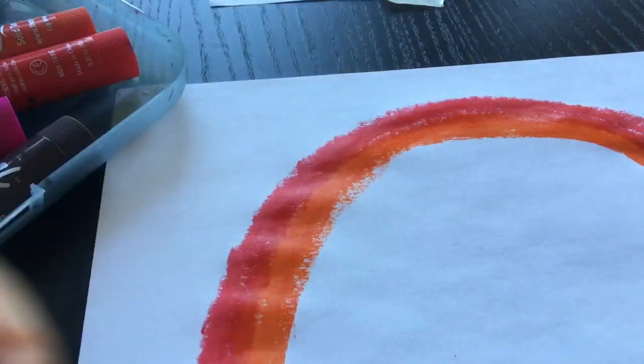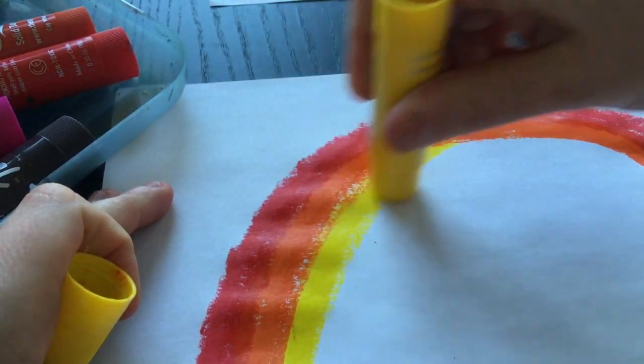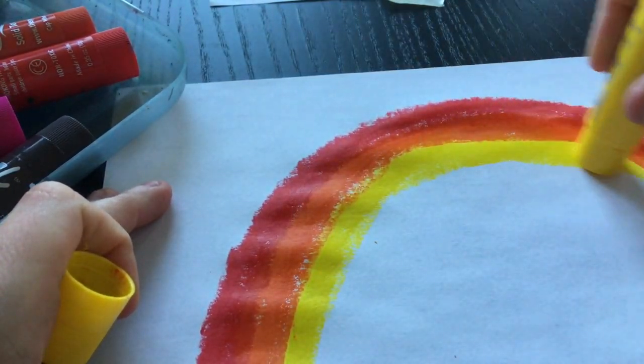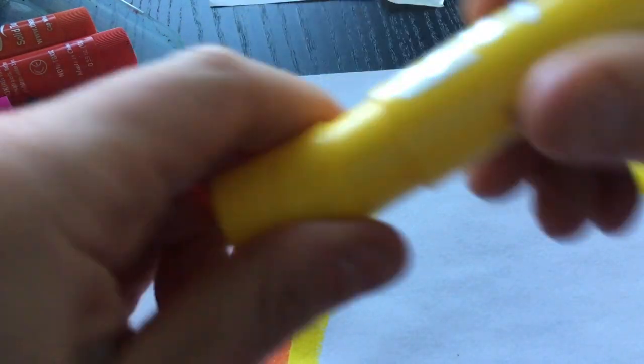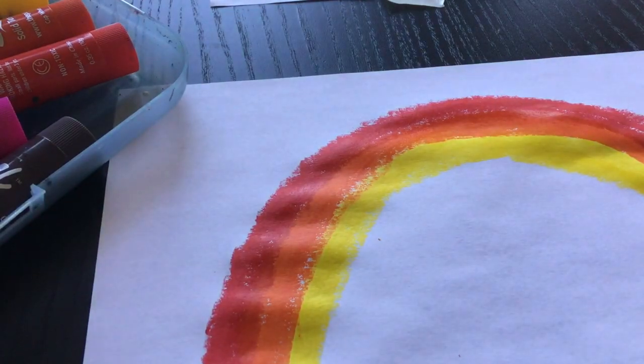You can always just experiment too on a different piece of paper and play around with them and see how they work. See, I'm kind of going back and forth over the same spot to catch those white spots. So experiment.